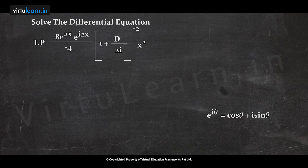The RHS is now x² — a polynomial in x^k form. Take the constant 2i common from the denominator; (2i)² = -4. Use the six standard inverse operator expansion formulas for (1 + D)^(-n) type expressions to expand. This gives: Im[-2e^(2x)·e^(i2x) · (1 + D/2i)^(-2) · x²].